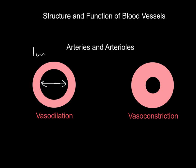This opening here is called a lumen — L-U-M-E-N — and that is the opening through which blood flows. During vasodilation, the lumen is very wide, which increases blood flow so you can get more blood to an area. During vasoconstriction, the lumen has become very narrow, which means you are reducing blood flow to an area.